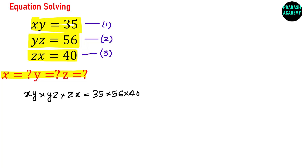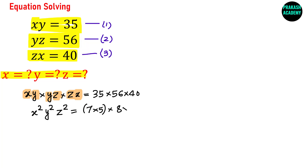On the left-hand side you have X appearing twice, Y twice, and Z twice, so this becomes X²Y²Z². On the right-hand side, you can factorize: 35 is 7×5, 56 is 8×7, and 40 is 8×5.